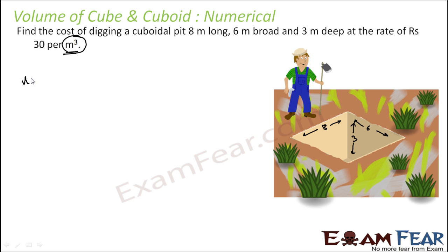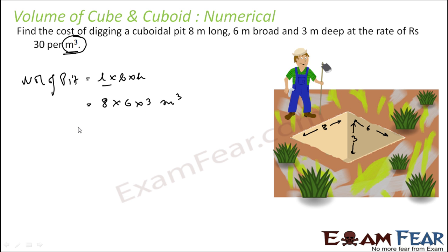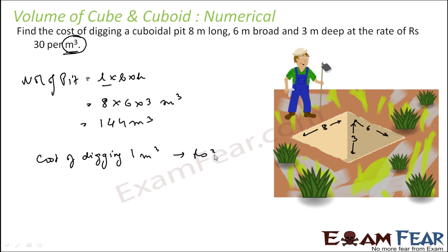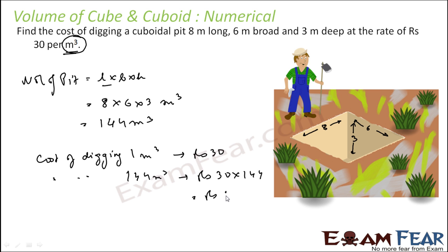First we will find the volume of the pit, that is length into breadth into height. This guy is supposed to dig the pit, so that is 8 into 6 into 3 meter cube. The volume of the pit is 144 meter cube. Cost of digging is 30 rupees, so cost of digging 144 meter cube would be rupees 30 into 144, and that is rupees 4320.